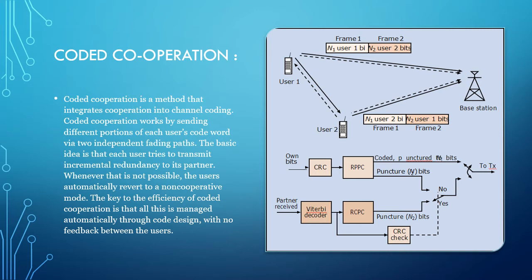Each user attempts to decode the transmission of its partner. If successful, in the second frame the user calculates and transmits the second code partition of its partner containing N2 code bits. Otherwise, the user transmits its own second partition, again containing N2 bits. Thus, each user always transmits a total of N bits — that is, N1 plus N2 bits per source block — over the two frames.